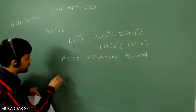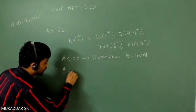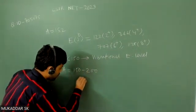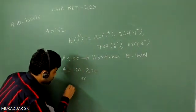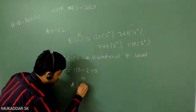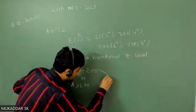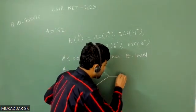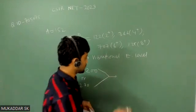But if you have a nucleus having mass number in the range of 150 to 200, or if you have a nucleus mass number greater than 230, they basically undergo rotation. So basically they show rotational spectra or rotational levels.